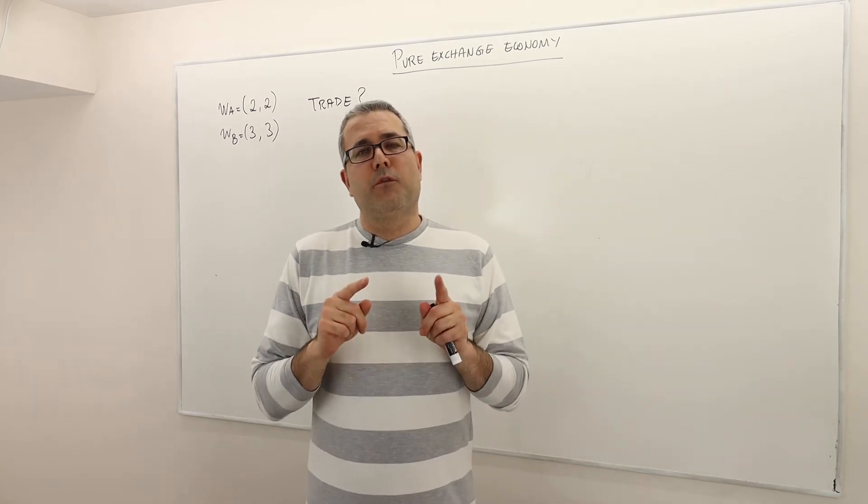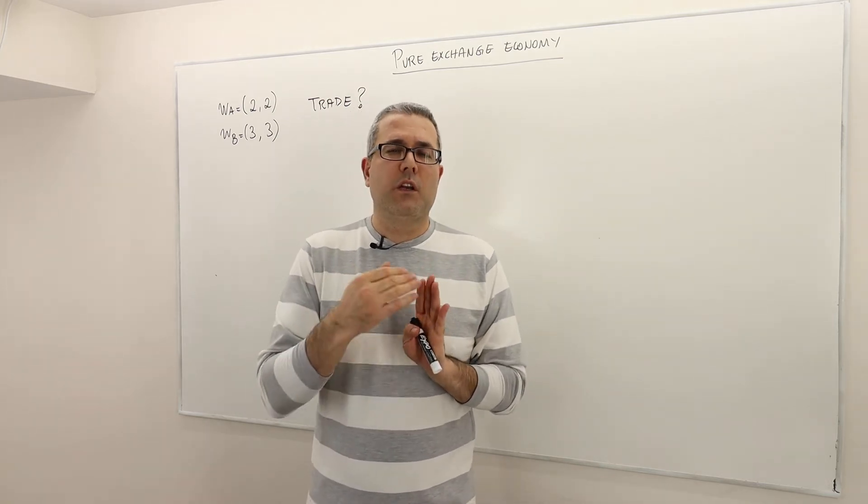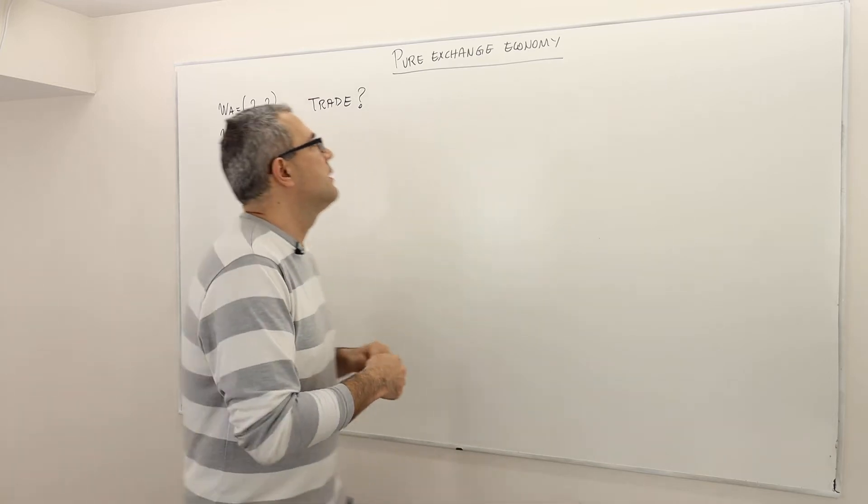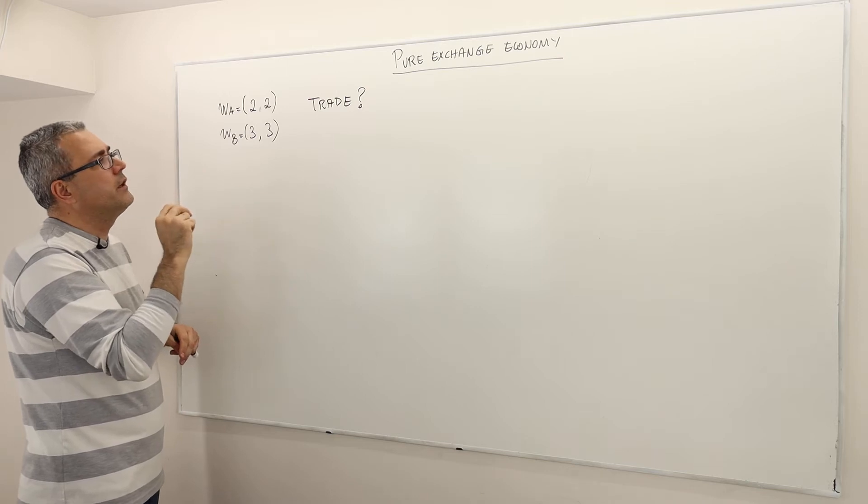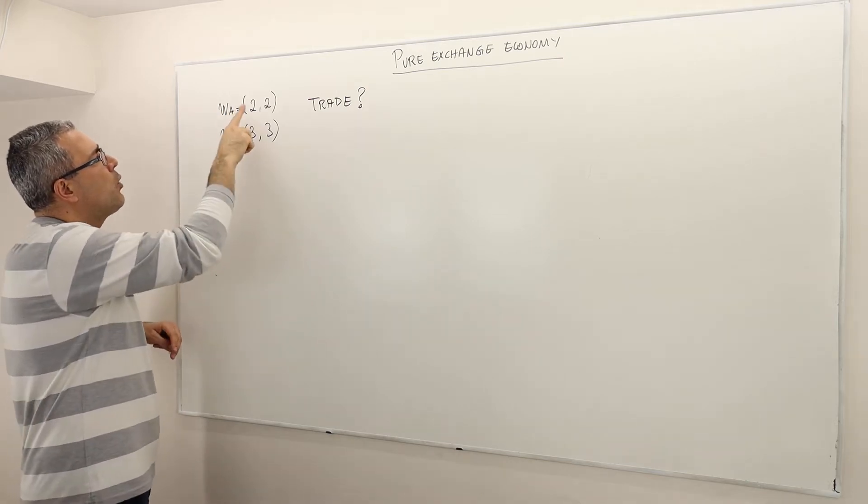Okay, so for this episode, I'm going to start with an example. Let's consider a pure exchange economy, two individuals, two goods, good one and good two.